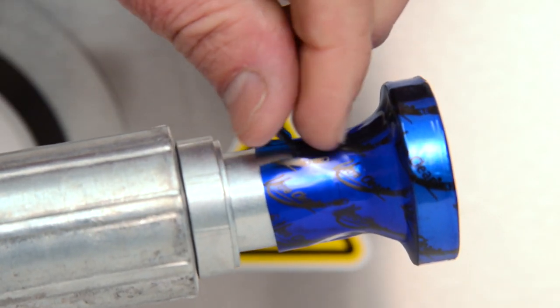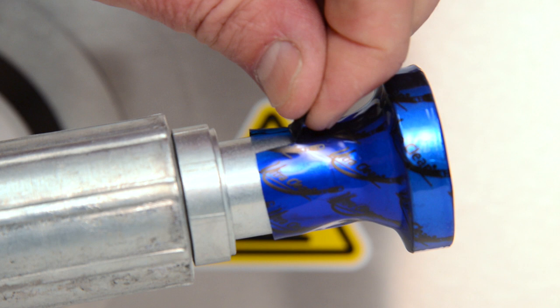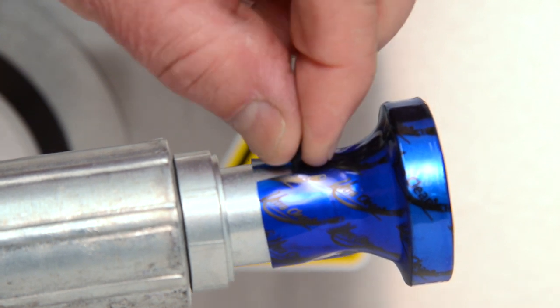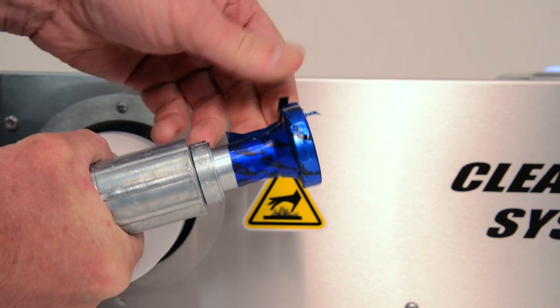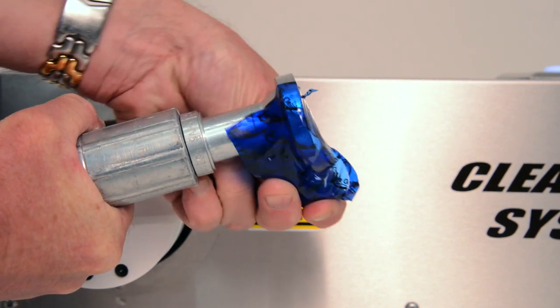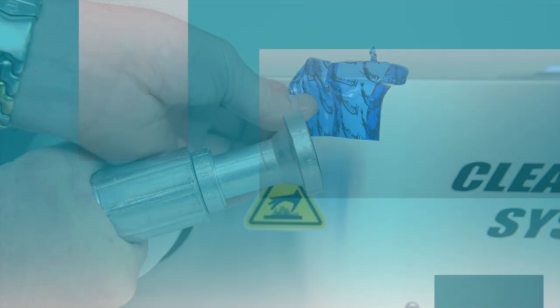The CleanSeal capsule has a unique tear strip that is easy to grab with or without gloves. Pull the tear strip up to remove the capsule cleanly from the hose end.